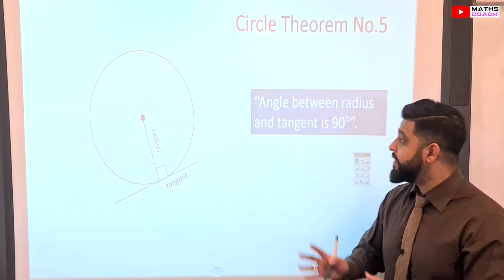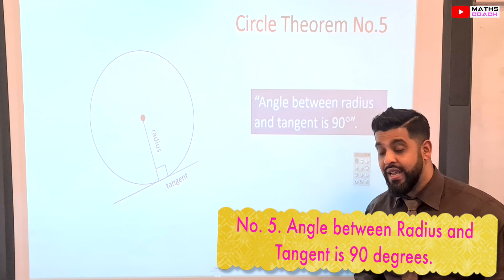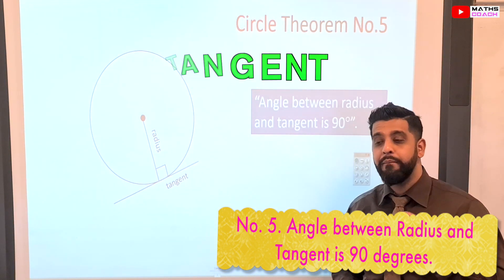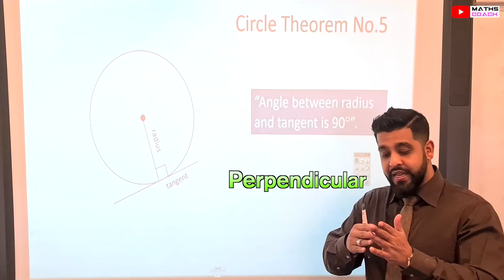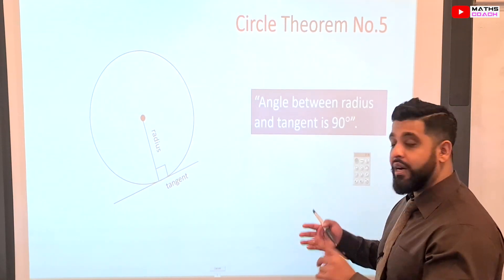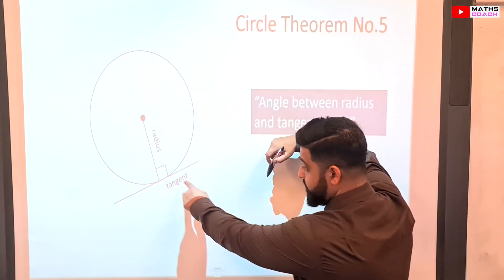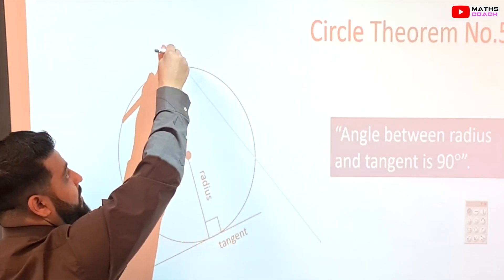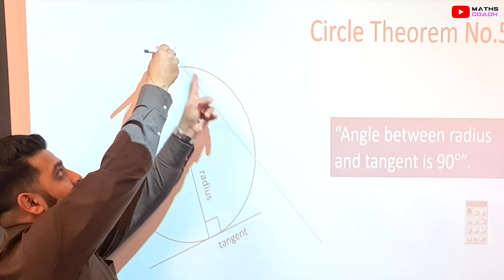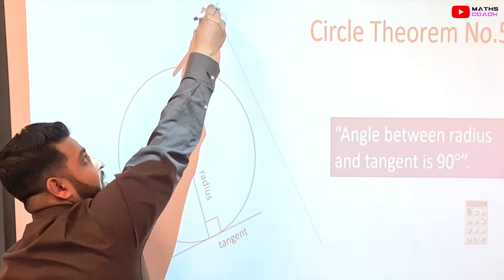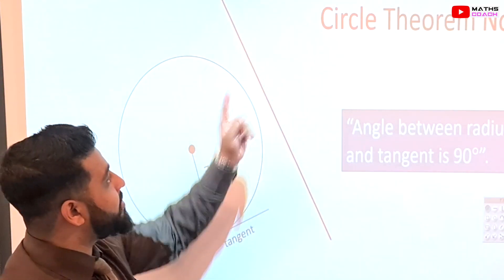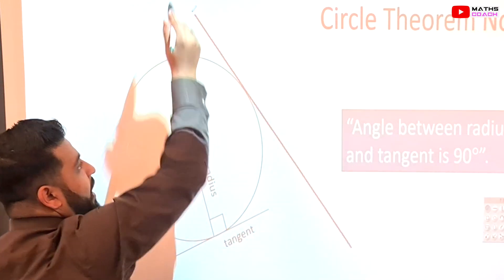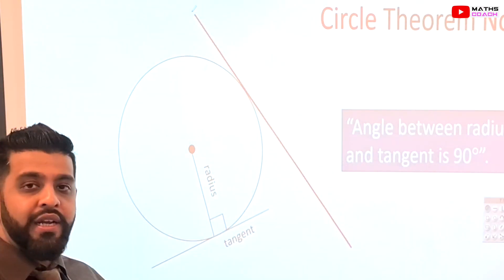Circle theorem number five: the angle between a radius and a tangent is 90 degrees. A tangent touches the circle at exactly one point and makes a perpendicular — a 90 degree angle — with the radius. A line that cuts through the circle is not a tangent, nor is a line that doesn't touch the circle. A tangent comes and touches the circle once and continues on. So this is also the tangent to a circle.